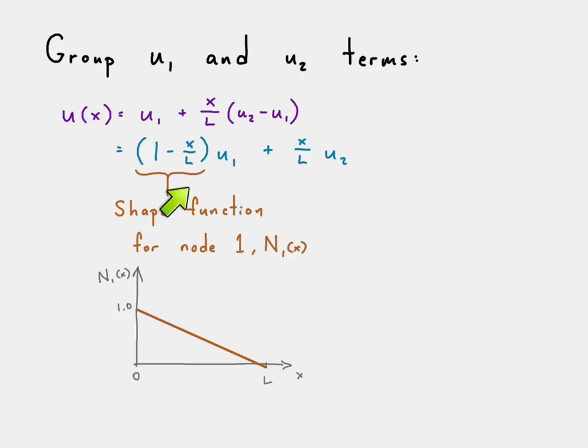And that looks just like this. It's linear. And notice how it goes from 1.0 at x equals 0 to 0 at x equals L, and varies linearly throughout.